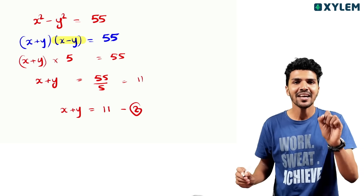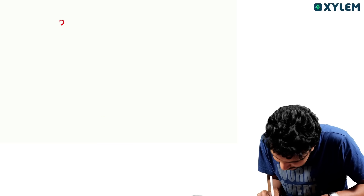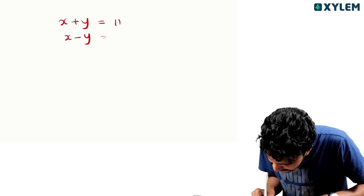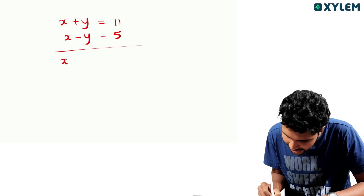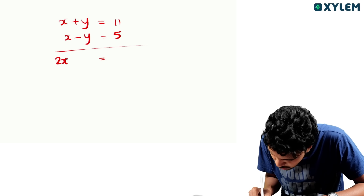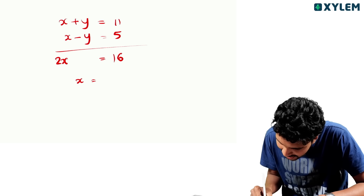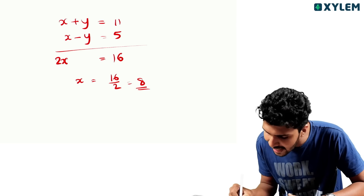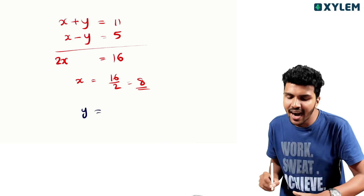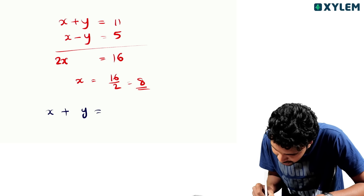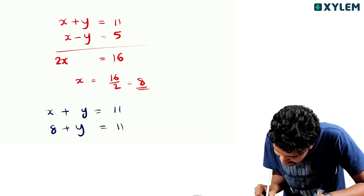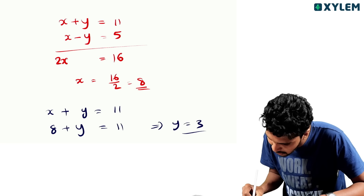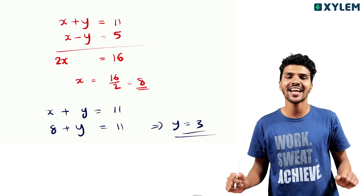This is the second equation. x plus y is equal to 11, and x minus y is equal to 5. So x plus y is equal to 11.